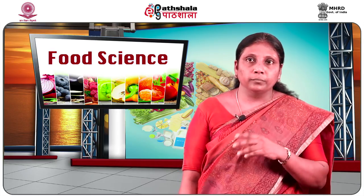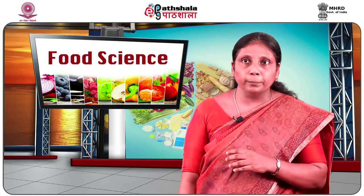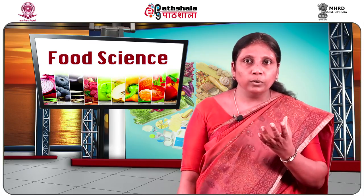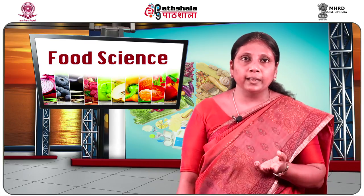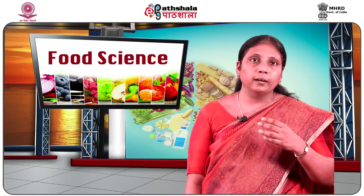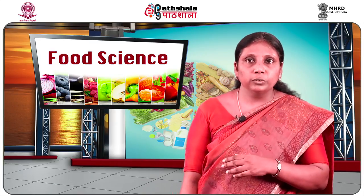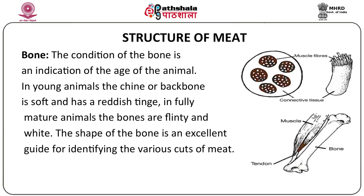Now let us move on to bone, which is also part of the gross structure of meat. When buying meat at the market, it is always desirable to buy a higher proportion of flesh to bone. The condition of the bone is an indication of the age of the animal. In young animals the chine or backbone is soft and has a reddish tinge, but in fully mature animals the bones are flinty and white. The shape of the bone is an excellent guide for identifying the various cuts of meat.